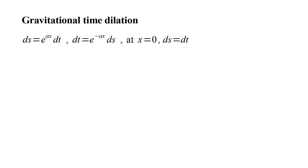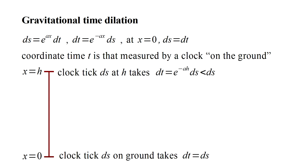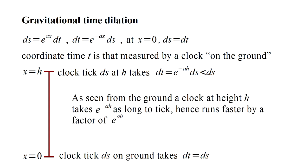For x equals zero, that is, on the ground, ds and dt are equal. So, our metric is telling us that our time coordinate t corresponds to the reading of a clock sitting on the ground, and we can call this ground time. Now, consider two clocks. One's on the ground at x equals zero, and another sitting on a shelf at height x equals h. On the ground, the time coordinate tick, dt, is equal to the clock tick, ds, but at height h, the time coordinate tick is equal to e to the minus ah times the clock tick, ds. Since e to the minus ah is less than 1, dt is less than ds. Even though to a local observer each clock ticks with the same increment ds, the time coordinate ticks, ground time increments, are different. As seen from the ground, a clock at height h takes less time to tick, hence it appears to run faster, by a factor of e to the ah.